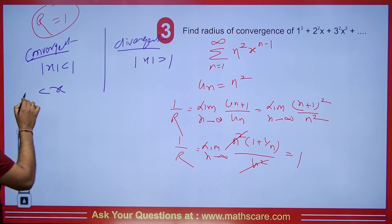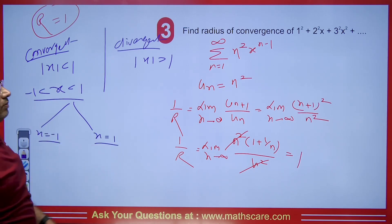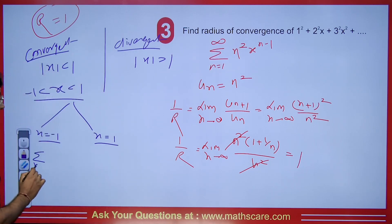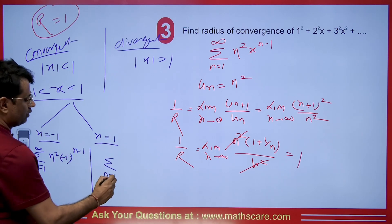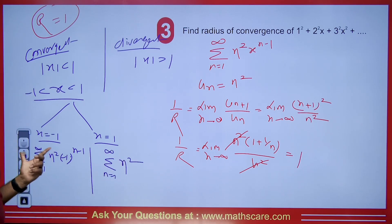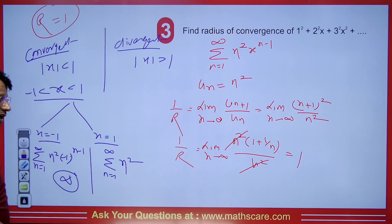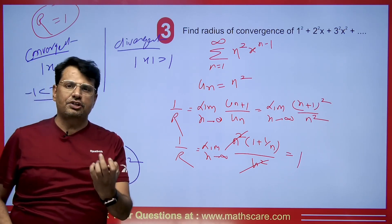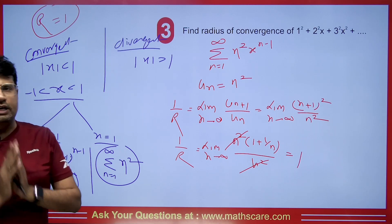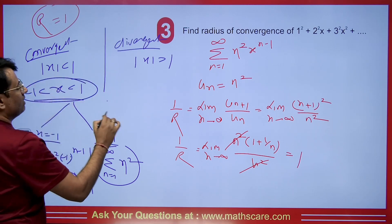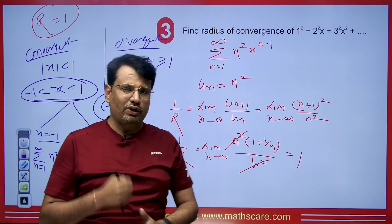The interval is (−1, 1). Checking x = −1: the series becomes Σn²(−1)^(n−1) — an alternating series, but by Leibniz's theorem the terms must tend to 0, and here n²→∞, so the theorem is not satisfied — divergent. At x = 1: Σn² also tends to infinity and does not satisfy the necessary condition for convergence — divergent. So the interval of convergence is the open interval (−1, 1).